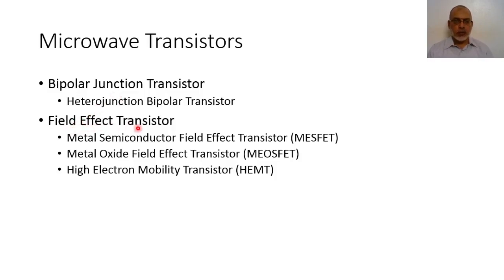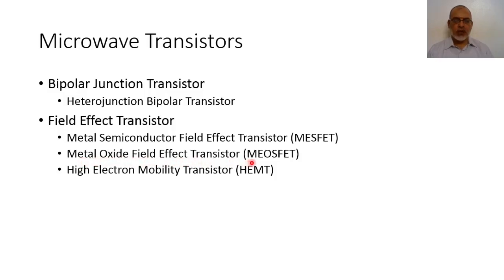Field effect transistors in microwave can be classified into three types: metal semiconductor field effect transistors abbreviated as MESFET, metal oxide semiconductor field effect transistors abbreviated as MOSFET, and finally high electron mobility transistors abbreviated as HEMT.